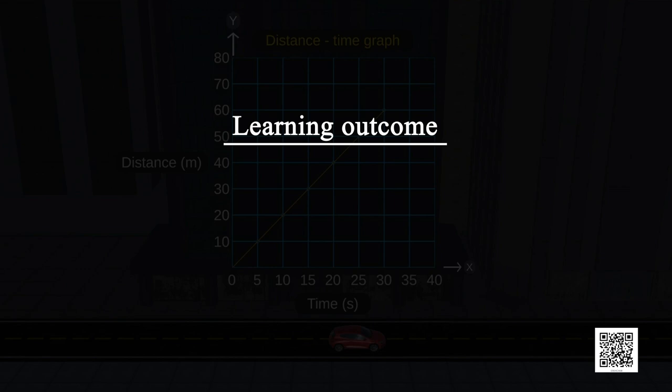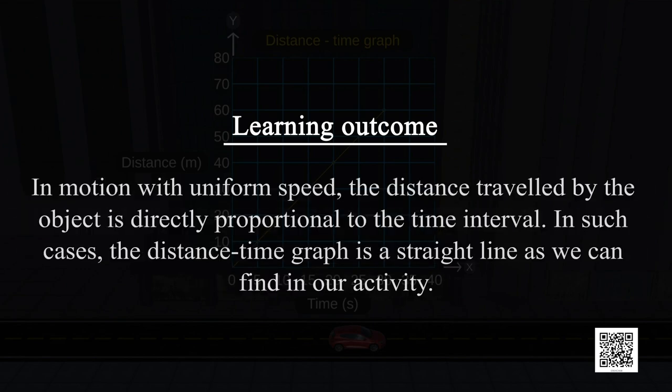Learning Outcome: In motion with uniform speed, the distance travelled by the object is directly proportional to the time interval. In such cases, the distance-time graph is a straight line, as we can find in our activity.